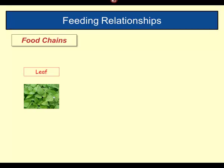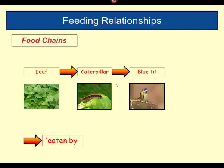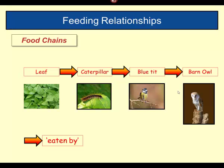You may have come across food chains before and you may know that they all start with what we call a producer. In this case, the producer is the leaf. The leaf catches energy from sunlight, photosynthesizes, and traps the energy — and it might get eaten by a caterpillar. Notice the arrow here: the arrow actually means 'eaten by.' So the caterpillar eats the leaf, and energy is transferring in that direction. To complete the food chain, the caterpillar is eaten by a blue tit, and the blue tit can eventually be eaten by a barn owl.